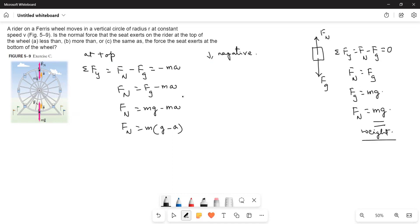Now, let us go to the bottom. At the bottom, again, I will write sigma Fy is equal to Fn minus Fg is equal to Ma, because A is also upward. So, I am taking upward direction as positive. Therefore, Fn is equal to Fg plus Ma. Your Fg is nothing but Mg.